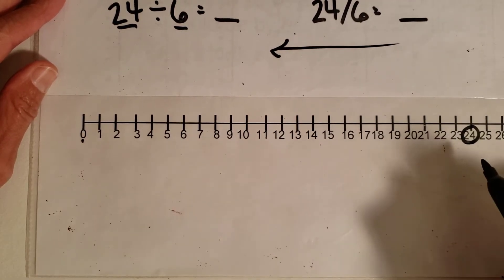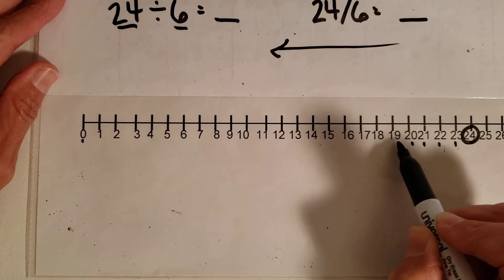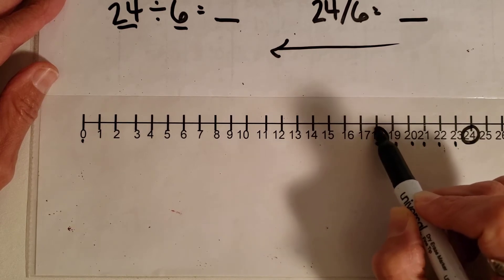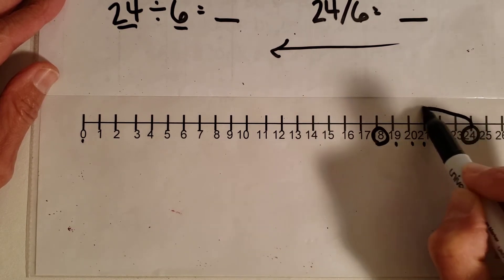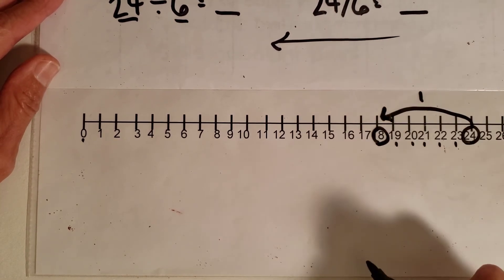Alright, so I am going to take one big hop of 6. So I count 1, 2, 3, 4, 5, 6 and then I circle it and I have just hopped this way. And actually, I've just hopped one time but I'm still not back at 0 yet.